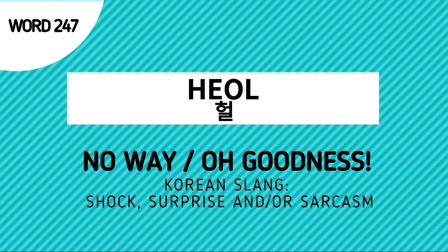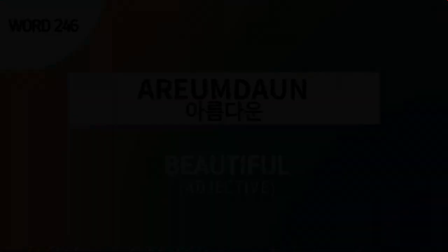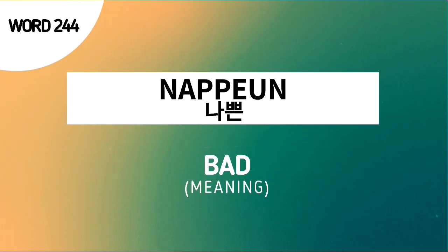Word number 247 is Holt, a Korean slang used to express shock, surprise, or sarcasm. Word number 246 is Kureso, which means 'soul.' Word number 245 is Arumdaon, which means 'beautiful.' And the last for our review, word number 244, Napaon, which means 'bad.'